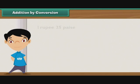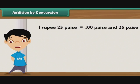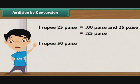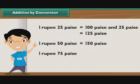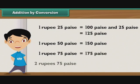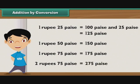So, one rupee 25 paise is the same as 100 paise and 25 paise — that is 125 paise. By the same logic, one rupee 50 paise is equal to 150 paise. One rupee 75 paise may also be represented as 175 paise, and two rupees 75 paise is equal to 275 paise.